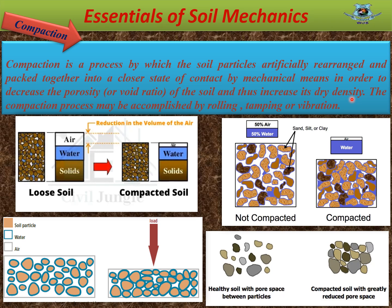It is a rapid process compared to consolidation. In compaction, some mechanical process is added. This mechanical process or compaction process may be accomplished by rolling, tamping, or vibration. In loose soil, after compaction, the air voids from loose soil reduce and the soil gets compacted. Due to the application of rapid load, natural soil is compacted by reducing air voids.